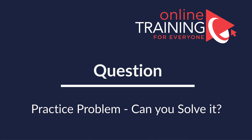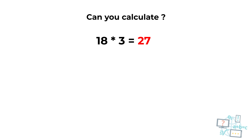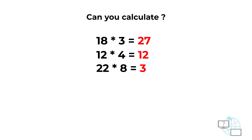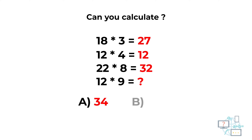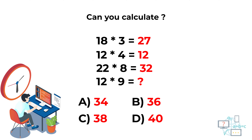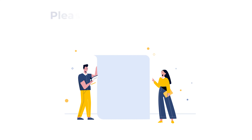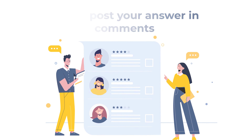Here's a practice question with three full expressions: 18×3=27, 12×4=12, 22×8=32. You need to calculate the result of 12×9. Choices: A) 34, B) 36, C) 38, D) 40. The answer may not be obvious — hint: think about why it's always a two-digit number multiplied by a one-digit number. The correct answer is choice B, 36.